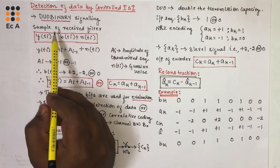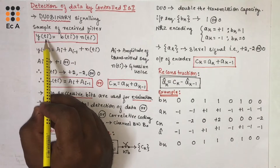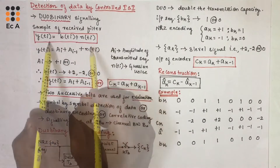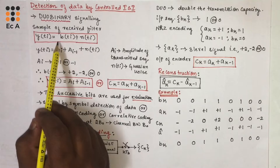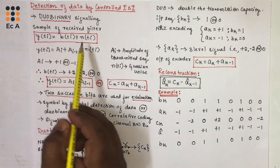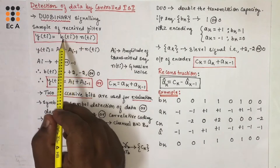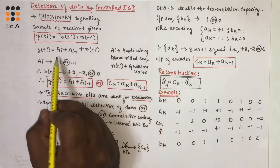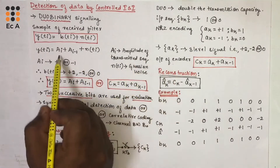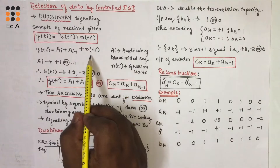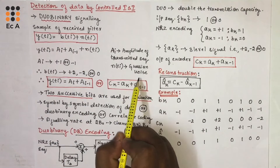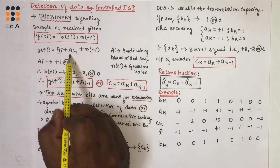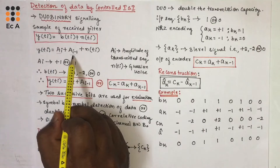Let us consider the sample of the received filter as Y(Ti) = B(Ti) + N(Ti). This is the sampled signal of the receiver in the band-limited channel communication. Here, B(Ti) can be written as Ai + Ai-1, where Ai represents the amplitude of the transmitted sequence and N(Ti) represents the Gaussian noise.